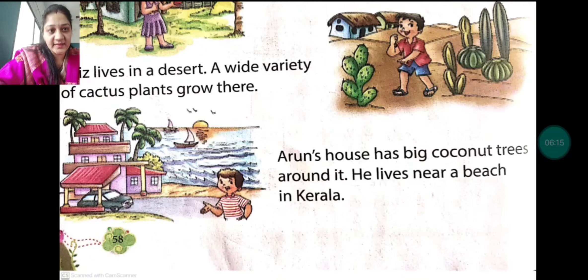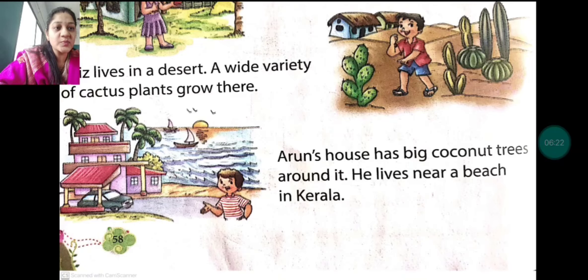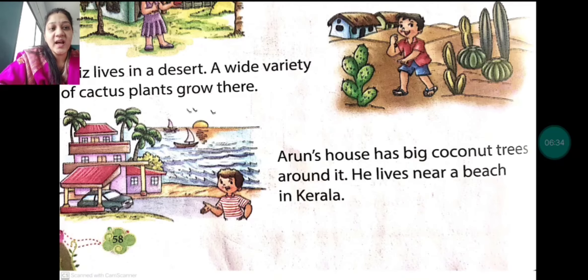Next, the picture showing Arun's house has big coconut trees around it. He lives near a beach in Kerala. So what does the third picture say? Arun's house has big coconut trees, and his house is situated near the beach in Kerala.